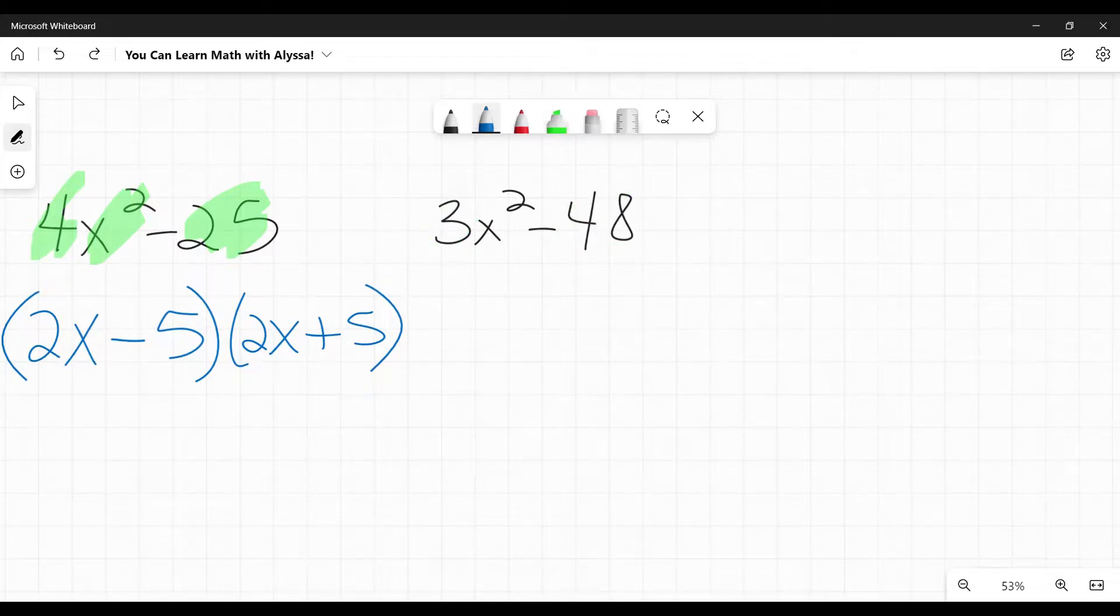When we do, we get three times x squared minus 16. There, now we have that perfect square and it becomes three times x minus four times x plus four.